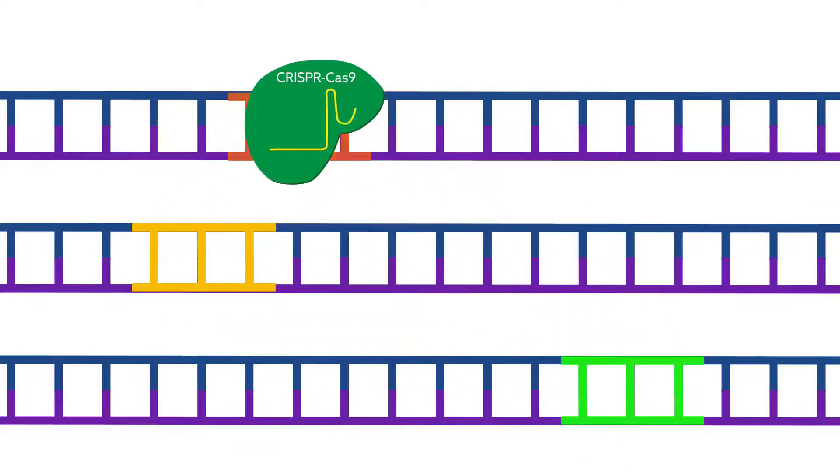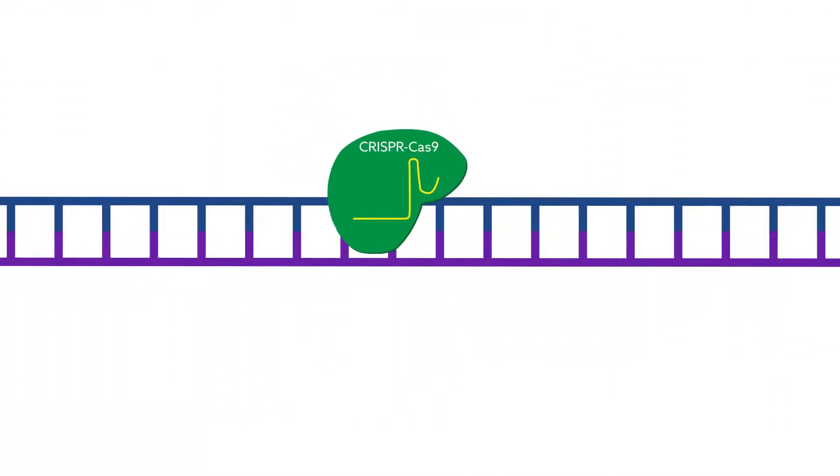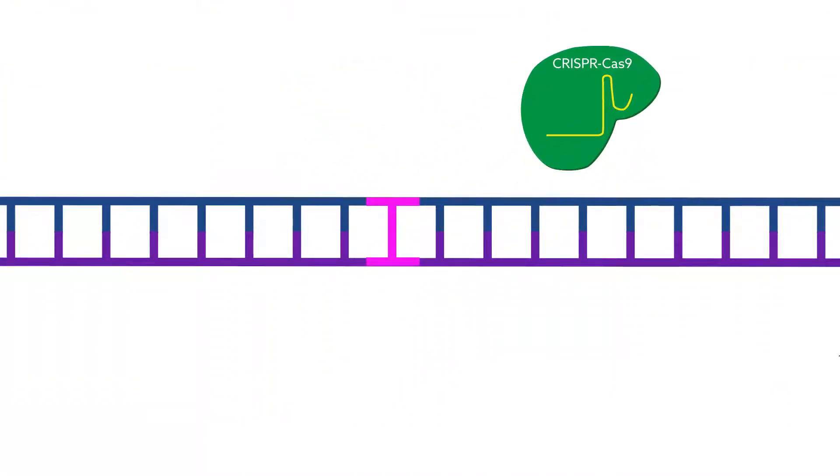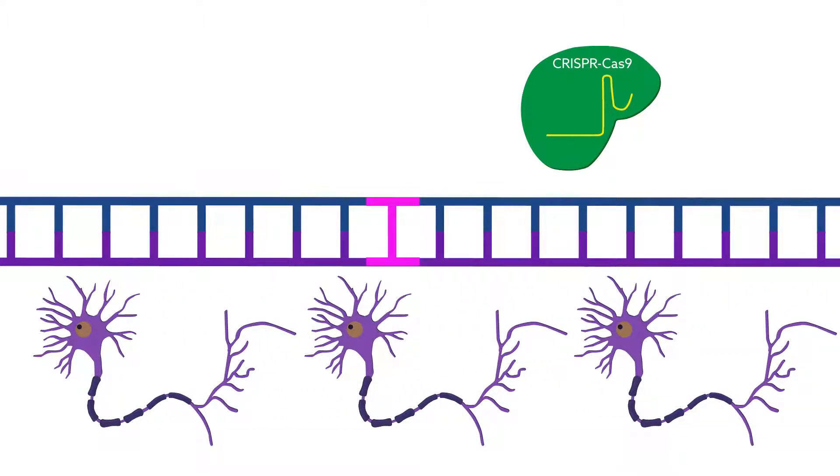The version of the technique that allows for the most precise edits, though, doesn't work in cells that are no longer dividing. Since that includes most of the neurons in the brain, this has limited the technology for neuroscientists.